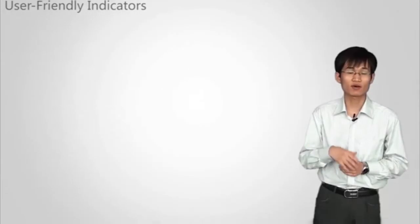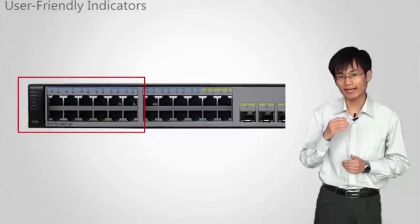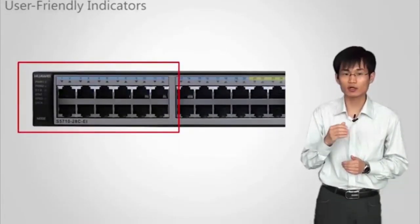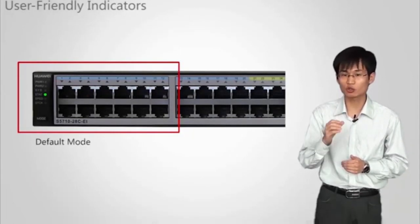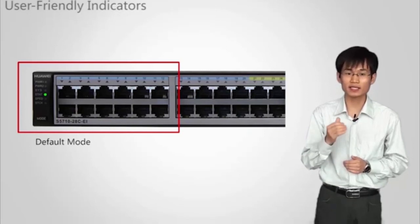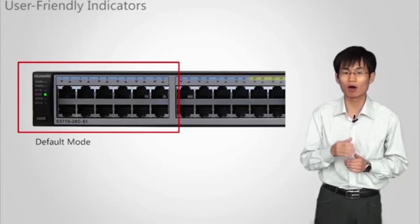Huawei's next generation enterprise case-shaped switches have indicator areas on the left panel. This area provides comprehensive indicators and a mode switching button. You can use this button to check indicator status in different modes. For example, on the S5700-28C-EI, by default, the STAT indicator is green, and the SPEED and STACK indicators are off.